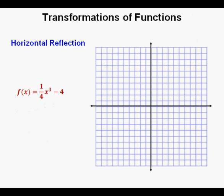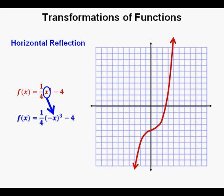Now we'll do a horizontal reflection, using the function 1 fourth x cubed minus 4. The reason we use a different function is that a horizontal reflection of a quadratic about the y-axis would not be apparent since the y-axis is a vertical axis of symmetry for that function. Here's the function graphed — it's 1 fourth of the cubic parent function y equals x cubed, shifted down 4 units. To reflect a graph horizontally, we replace the variable x with negative x inside parentheses. The graph in blue is a horizontal reflection of the original red function.